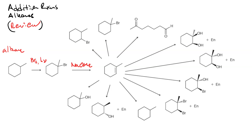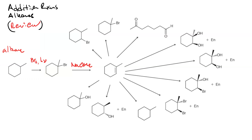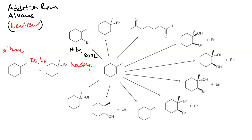That gives us our more substituted alkene. From the alkene, this is an anti-Markovnikov hydrobromination — to do that we need hydrobromic acid and peroxide. To do the Markovnikov hydrobromination we just need HBr.